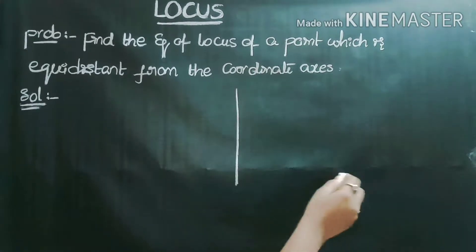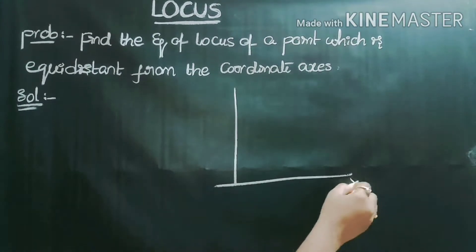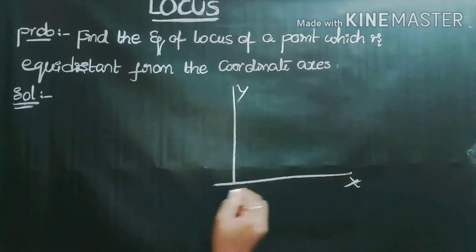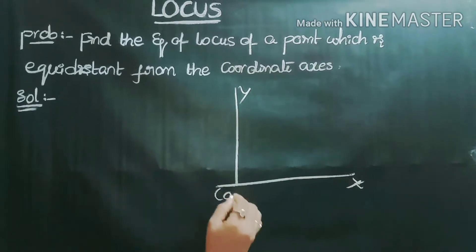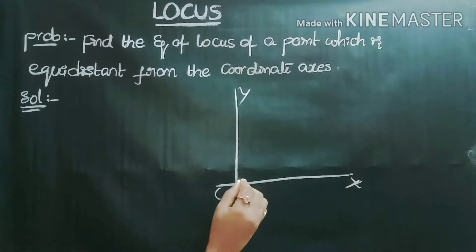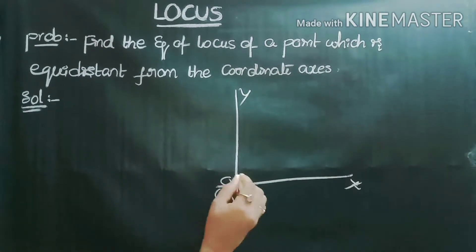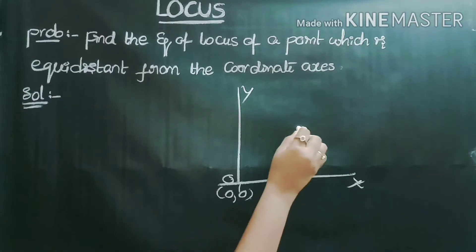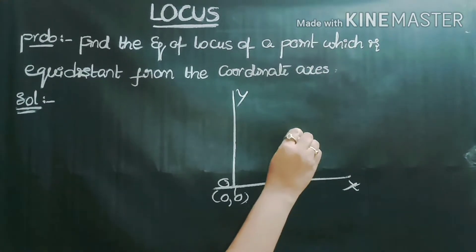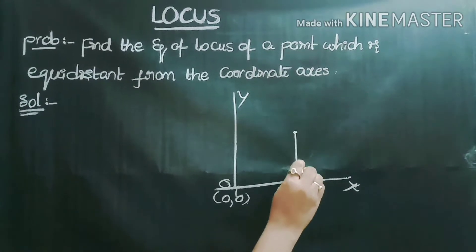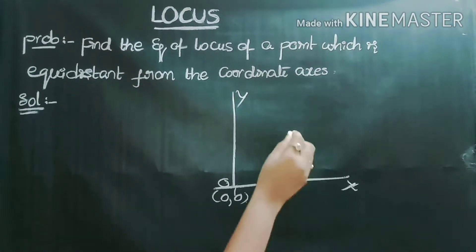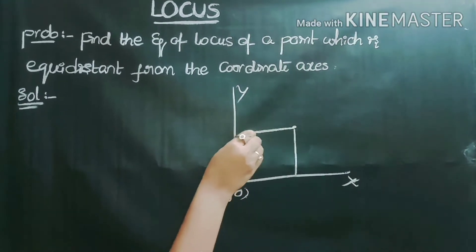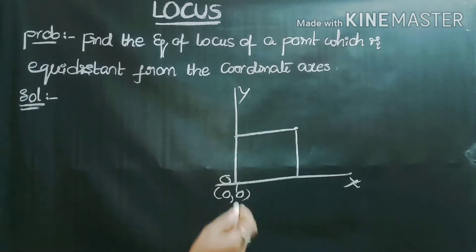First we have taken the coordinate axes here — the x-axis, the y-axis, and their point of intersection, which is always (0, 0). Now I take one point here such that the distance from the point to the x-axis equals the distance from that point to the y-axis.